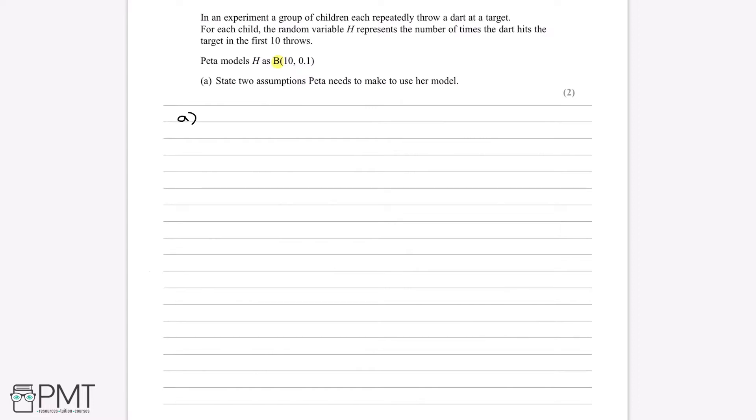First of all, we know this is a binomial distribution because of the B notation. This tells us it's a binomial distribution, and from that we know there are a set of assumptions that come from modelling with a binomial distribution - things we have to assume for it to work. For example, one general assumption is that there has to be a fixed probability of success, which is p, stated here as 0.1.